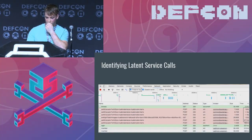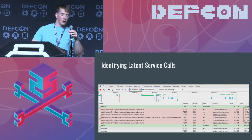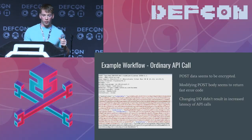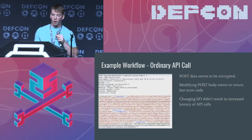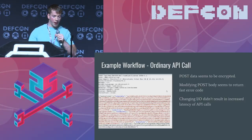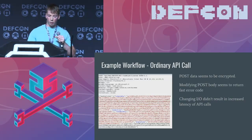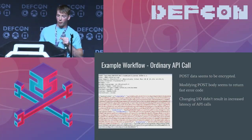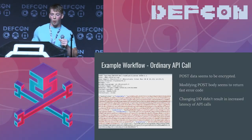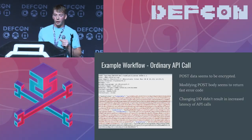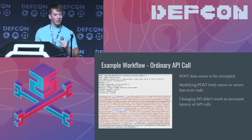Let's assume we've identified an interesting latent service call. As a first example, here we have a POST request to some licensing endpoint with a bunch of encrypted data. When I base64 decoded it and started messing with it, it just returned a fast error code. Changing the I/O didn't really result in increased latency. So this is an example of a call that might not be a good attack vector.